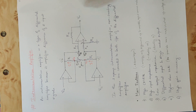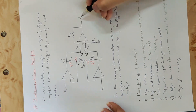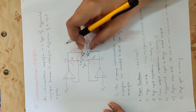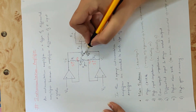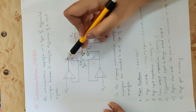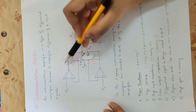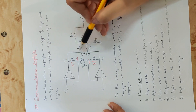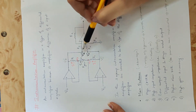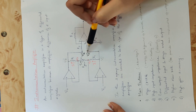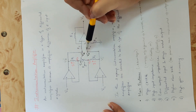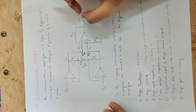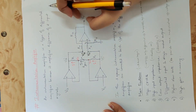So this differential amplifier — the output voltage equation is in terms of these two inputs. The op-amp output is Vi1' and this op-amp output is Vi2'. These are the inputs to the differential amplifier. So this is how we derive the output voltage equation in terms of Vi1' and Vi2'.